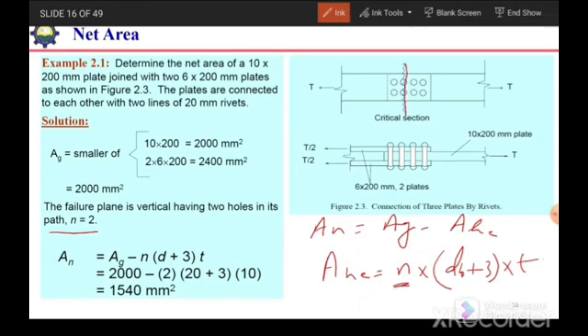Here, if we see our critical section is over here, there are two bolts. If we take the critical section at any location, two bolts will come in that path, so n is equal to 2. The diameter of bolt or rivet is given, which is 20 millimeter. And 3 is 1.5 plus 1.5: 1.5 for the diameter of hole and 1.5 millimeter for the allowance for damage.